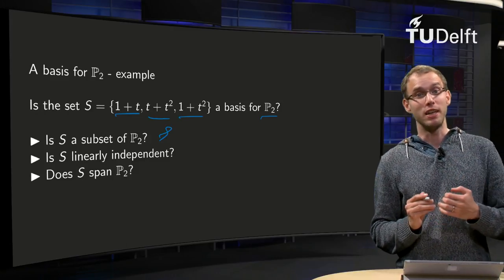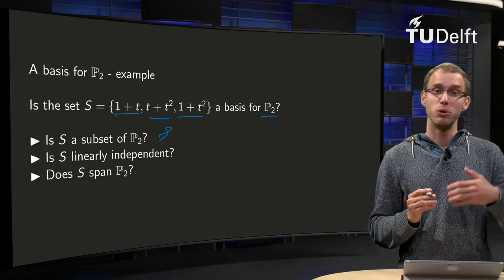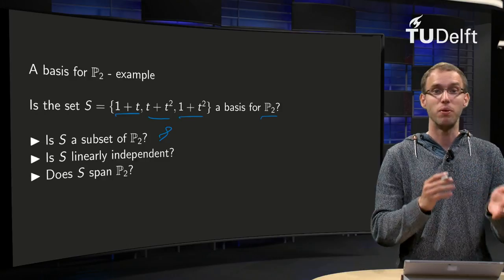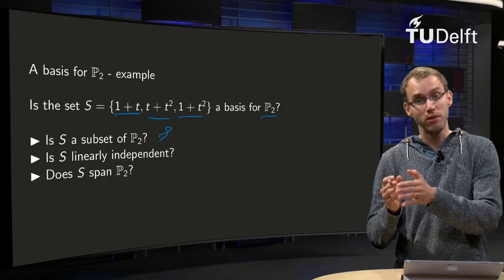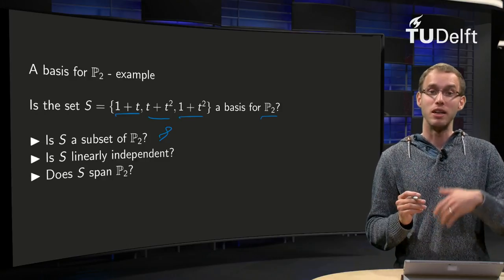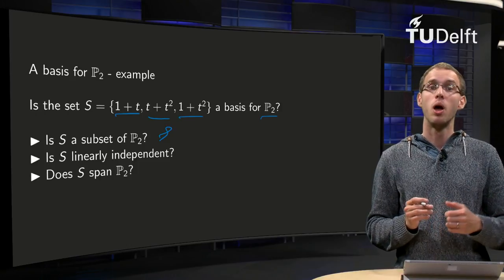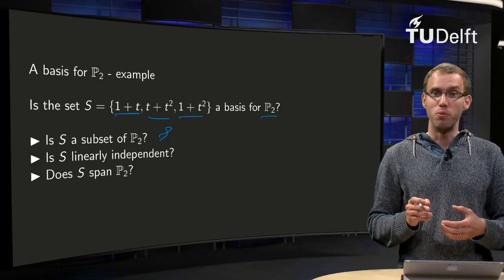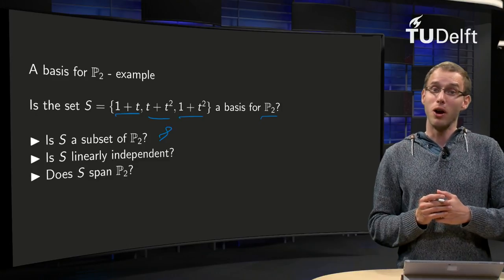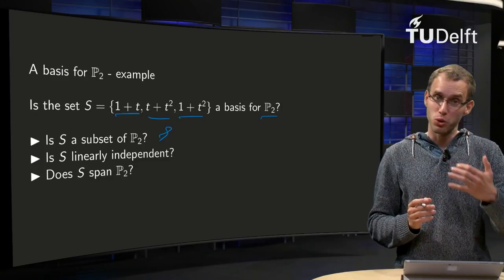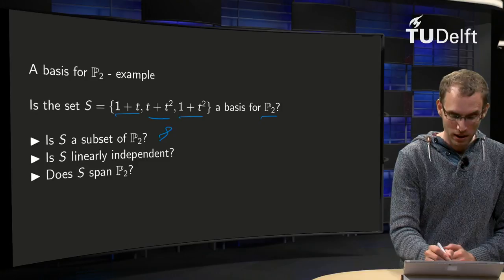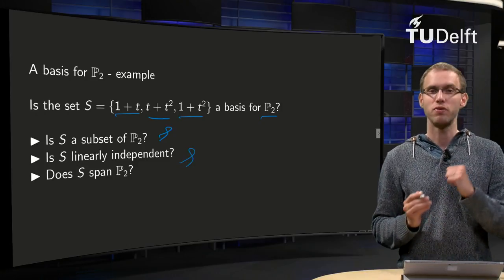Then you will have to check whether the set S is independent, so you have to see whether the equation c₁v₁ plus c₂v₂ plus c₃v₃ equals zero has only the trivial solution. That would require some work. Fortunately, we have done this work already in an earlier web lecture and we saw that this set is indeed independent, so that part is fine.